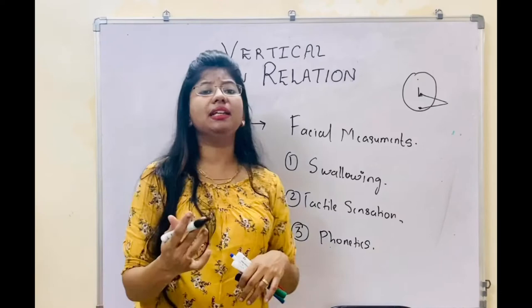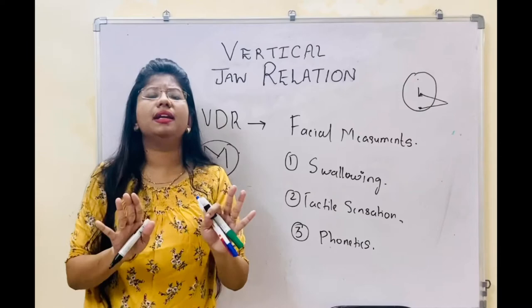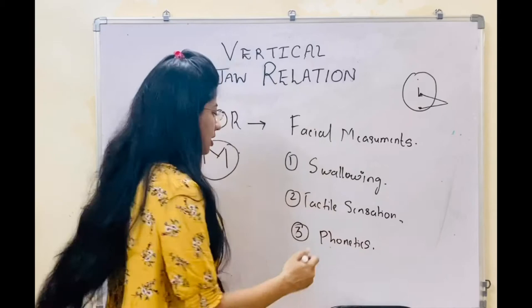Then there are facial expressions. You can see the skin around the eyes, the skin around the nostrils — they should be in a relaxed position. The patient should be in a relaxed breathing position. You can notice all this in the form of facial expressions and determine that the patient is in a physiological, or vertical dimension at rest, position.